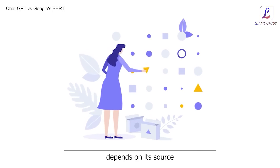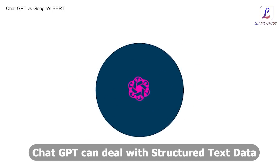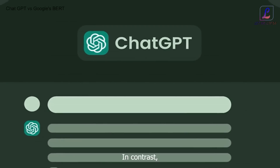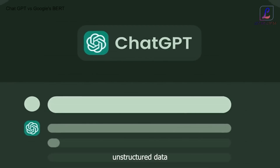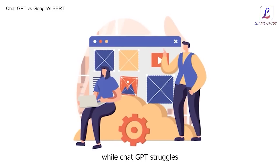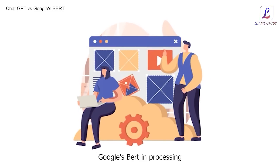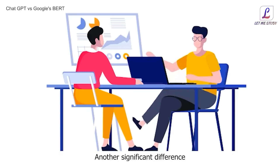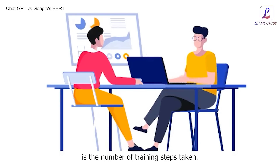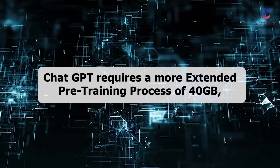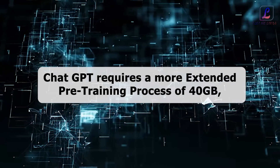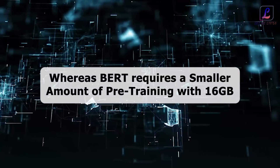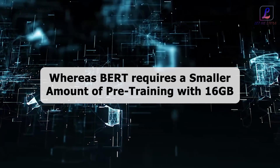However, the outcome of the model depends on its source and training method. ChatGPT can deal with structured text data, while Google's BERT can handle unstructured data. While ChatGPT struggles to use live data, Google's BERT excels in processing real-time queries from the internet. Another significant difference is the number of training steps: ChatGPT requires a more extended pre-training process of 40GB, whereas BERT requires a smaller amount of pre-training with 16GB.